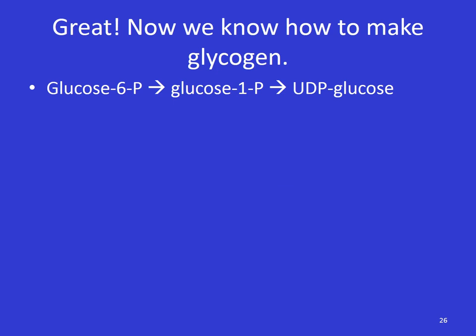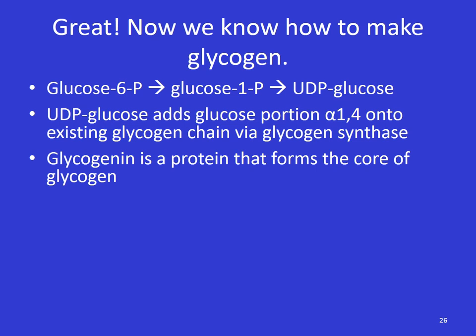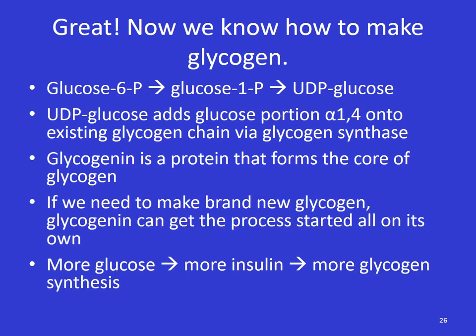Let's review. Now we know what glycogen is and how to make it. If we have glucose-6-phosphate from the first step in glycolysis, that gets converted to glucose-1-phosphate, and then to UDP glucose — uridine diphosphate glucose. UDP glucose adds the glucose portion alpha-1,4 onto an existing glycogen chain via the important enzyme glycogen synthase. The core of glycogen is a small protein called glycogenin, which can both act as a scaffold to hold glycogen and can make new glycogen by adding glucoses onto itself. If we intake a lot of glucose, we make more insulin, which tells our body to store that glucose as glycogen.